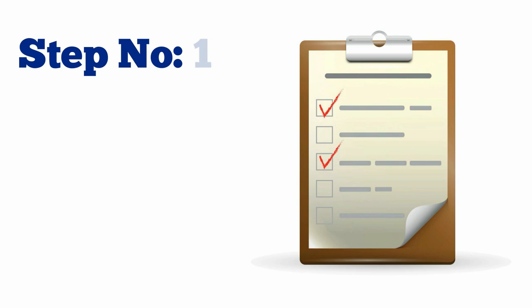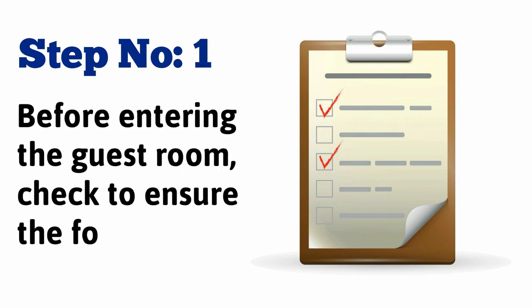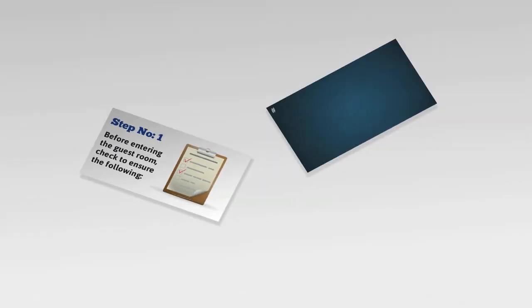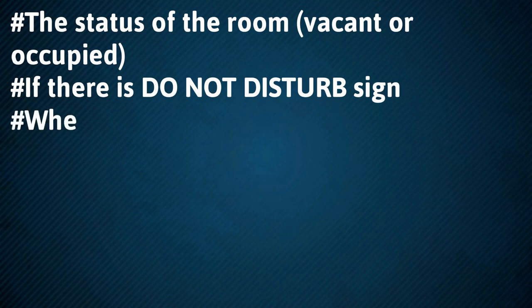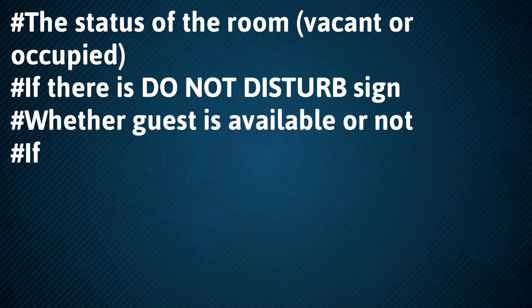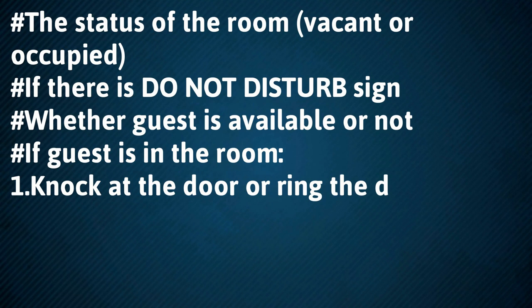Step number 1. Before entering the guest room, check to ensure the following: the status of the room — vacant or occupied; if there is a Do Not Disturb sign; and whether the guest is available or not, i.e., if the guest is in the room.